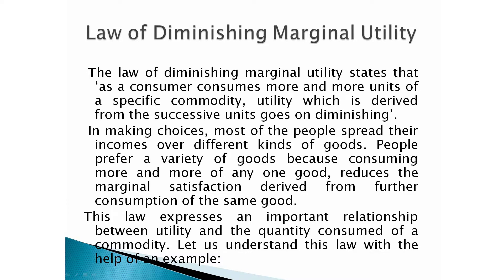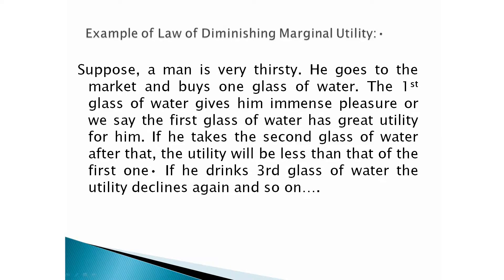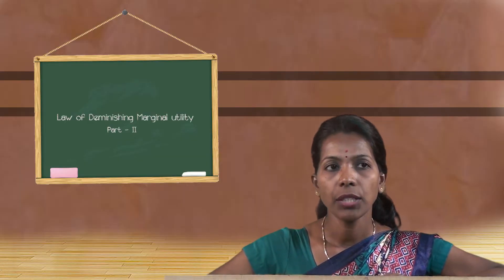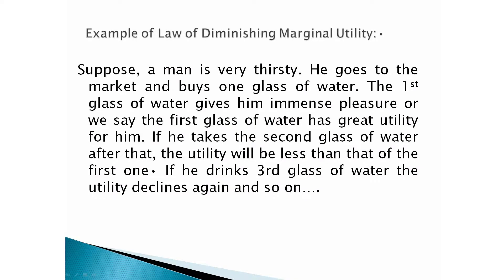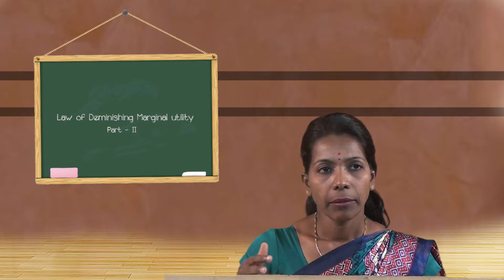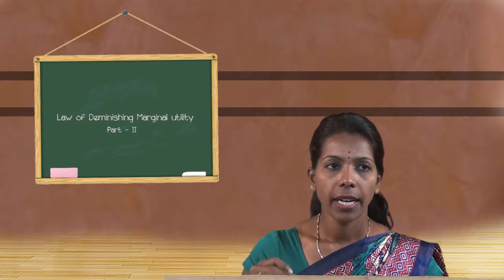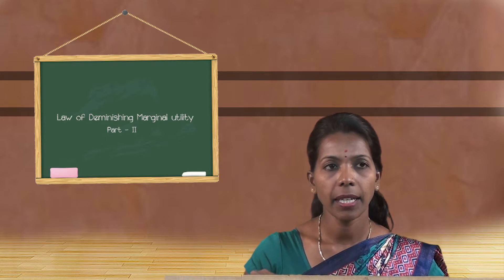Let us understand this law with the help of an example. Suppose a man is very thirsty and goes to the market and buys one glass of water. The first glass gives him great pleasure — the first glass has great utility for him. If he takes a second glass, the utility will be less than that of the first one. If he drinks a third glass, the utility declines again. When he consumes the fourth glass, the utility declines further and may reach zero.